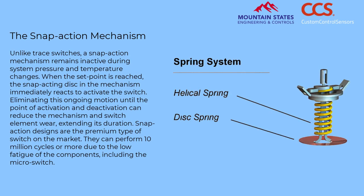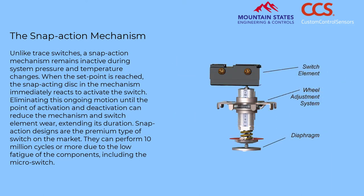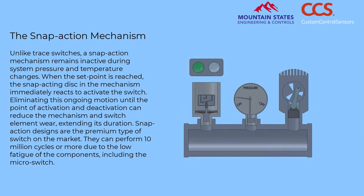The snap action mechanism. Unlike trace switches, a snap action mechanism remains inactive during system pressure and temperature changes. When the set point is reached, the snap acting disk in the mechanism immediately reacts to activate the switch. Eliminating this ongoing motion until the point of activation and deactivation can reduce mechanism and switch element wear, extending its duration. Snap action designs are the premium type of switch on the market, capable of performing 10 million cycles or more due to the low fatigue of the components, including the micro switch.